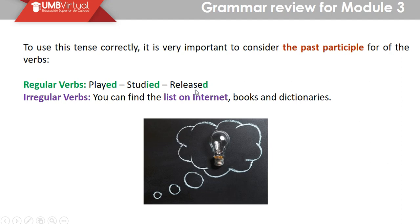Para los verbos regulares, vamos a agregar -ed generalmente. Sin embargo, hay ciertas modificaciones: si el verbo termina en 'y', quitamos la y y ponemos -ied. Si termina en 'e', solamente agregamos -d. For irregular verbs, you can find a list on the internet, books and dictionaries.